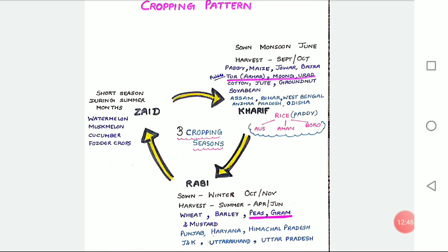Now, Kharif crops. Kharif crops are grown with the onset of monsoon in different parts of the country and are harvested in September-October. Important crops grown during this season are Paddy — children, Paddy means rice; Paddy becomes rice after the removal of husk. So the important crops are Paddy, Maize, Jowar, Bajra, Arhar, Moong, etc.